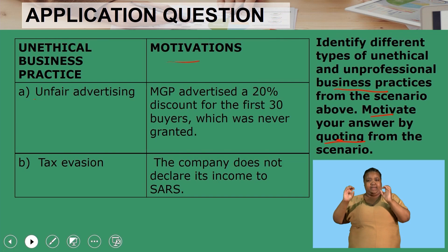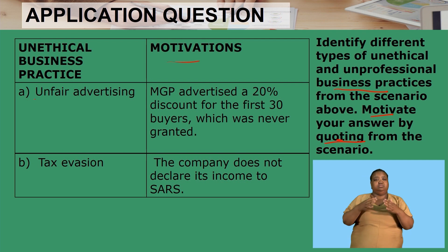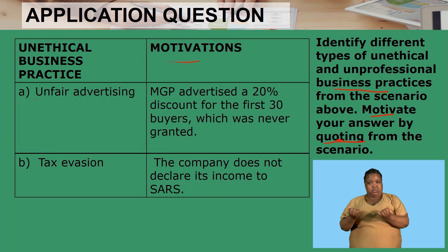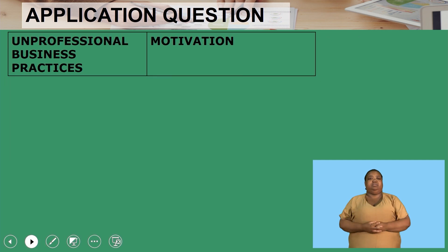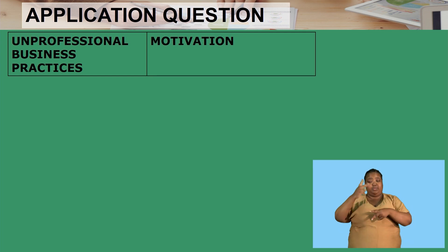If you identified three unethical business practices, you are wrong — there were only two unethical business practices. Now we move to unprofessional business practices. The question said identify different types of unethical and unprofessional business practices from the scenario. From the scenario we identified two unethical practices, so now the third one is unprofessional.